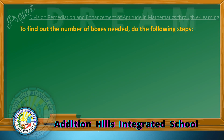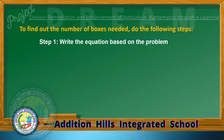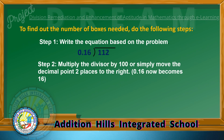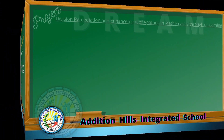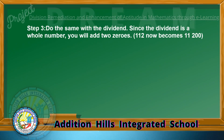To find out the number of boxes needed, we are going to divide. Step 1: Write the equation — 112 divided by 1.6. Step 2: Multiply the divisor by 100, or simply move the decimal point 2 places to the right, so 1.6 becomes 16. Step 3: Do the same with the dividend. Since the dividend is a whole number, add two zeros, so 112 becomes 11,200.